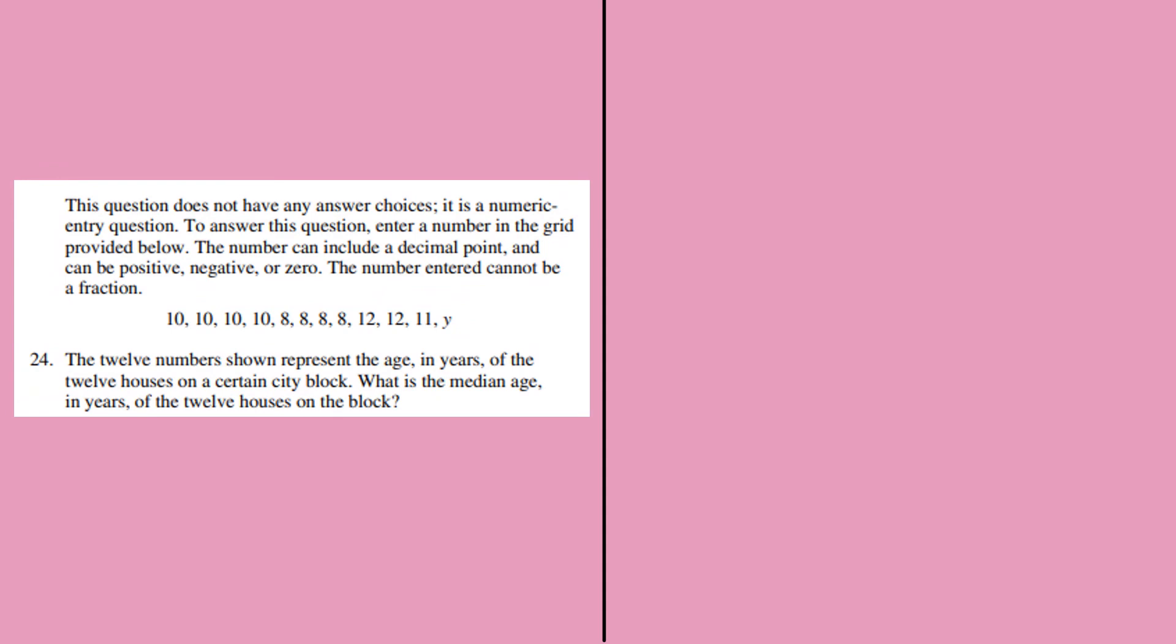In this 24th question, there are 12 numbers which are representing the age in years of 12 houses. We have to find the median age. When we always find the median, we pick the middle term after sorting them out. So first we have to sort them out. Now we have one unknown Y.